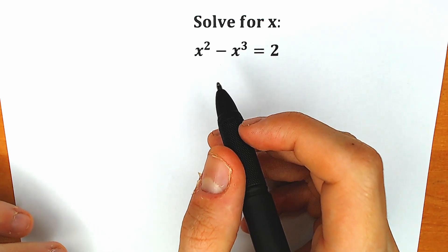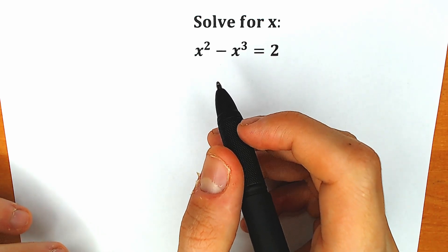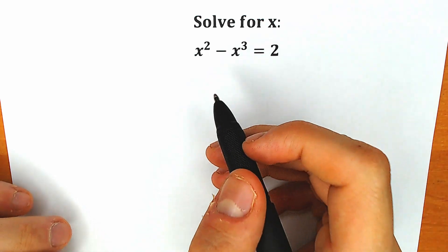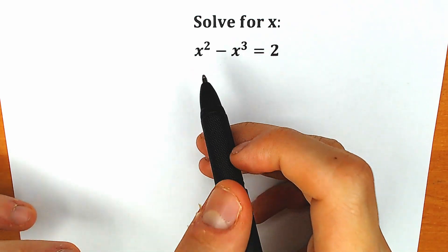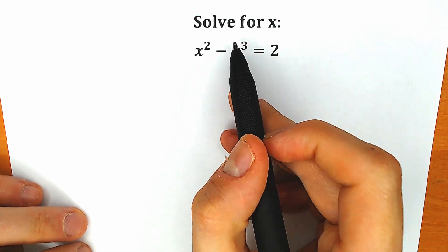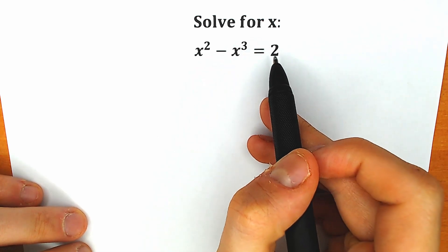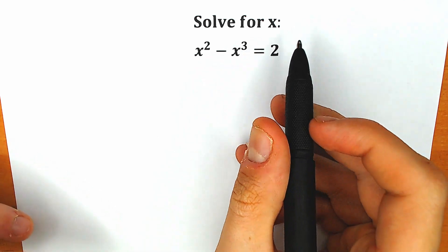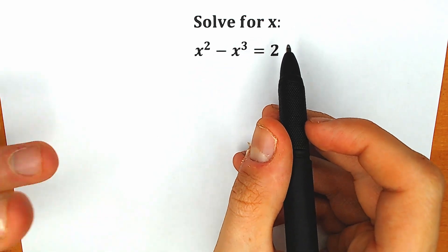Hello everyone! Welcome back to my channel. I'm a Semetics! Today we have a very interesting Olympiad algebra question: x squared minus x cubed equals 2, and we need to find our x.